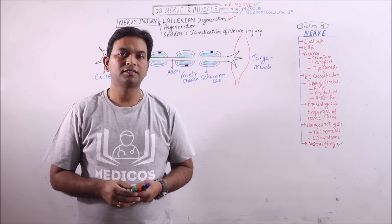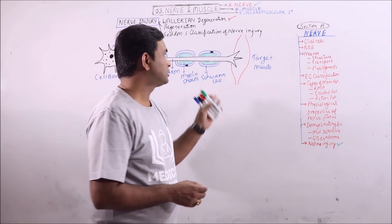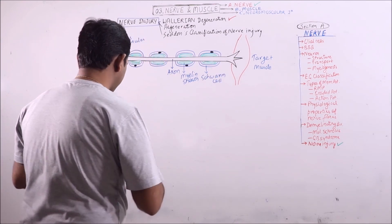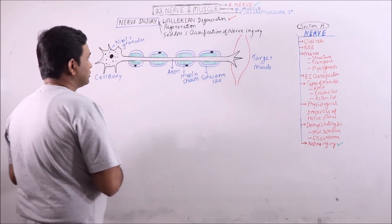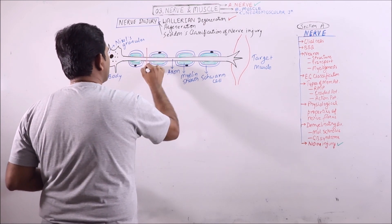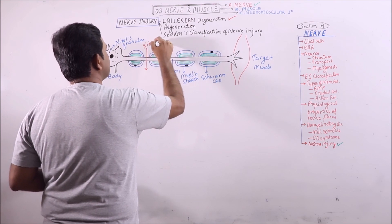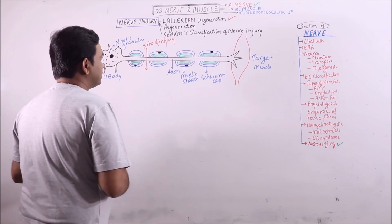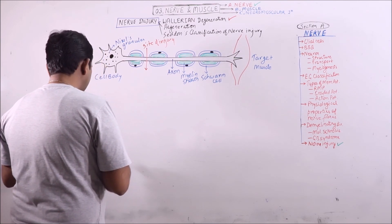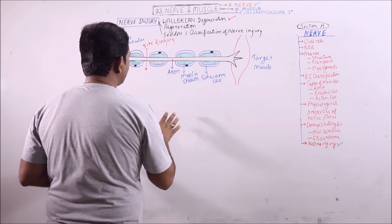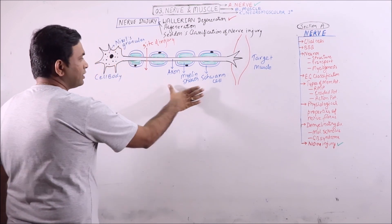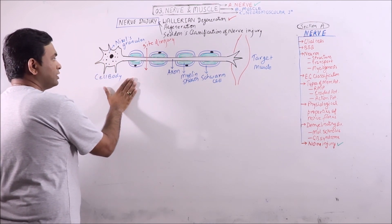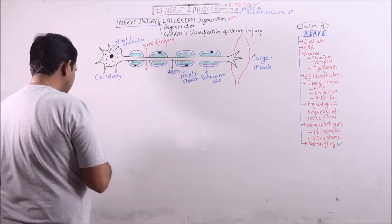In the first two lectures we will discuss the events following the nerve injury. This is a neuron which is attached with the target muscle forming a neuromuscular junction. If a section or cut or injury occurs at this side — this is the side of injury — then what is going to happen. The events following a nerve injury are basically divided into two parts: what are the events occurring in the region distant to the site of injury, and what are the events occurring in the proximal site of injury.